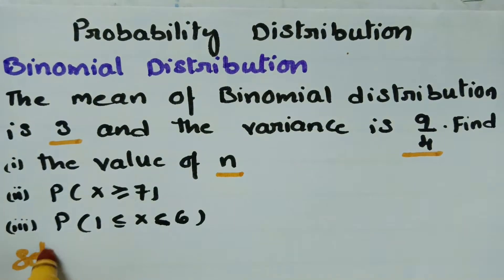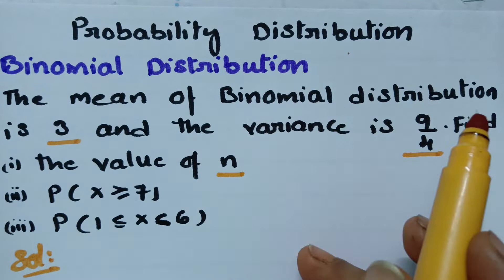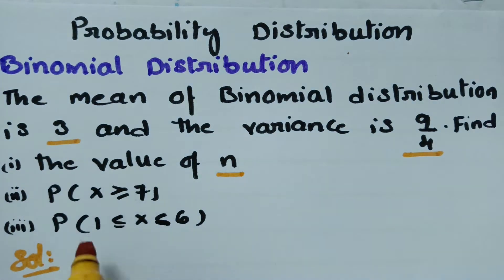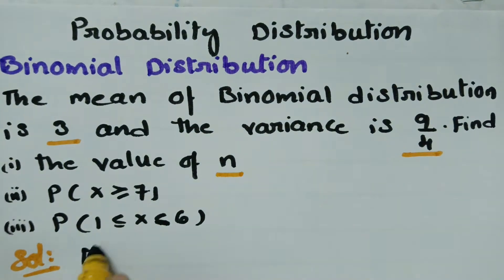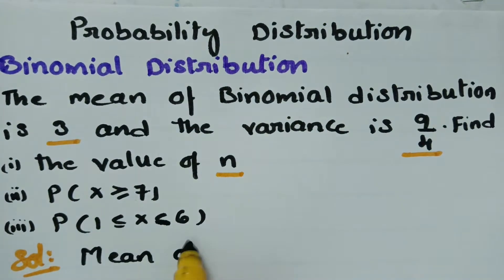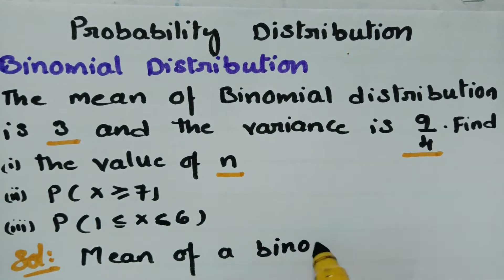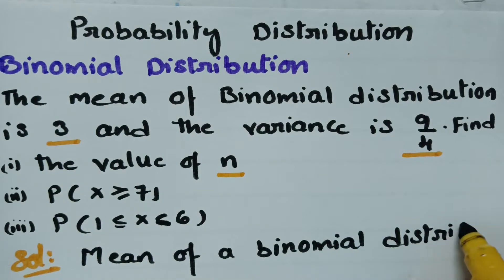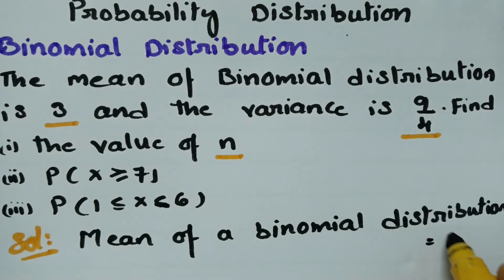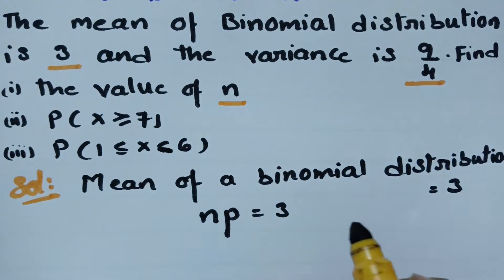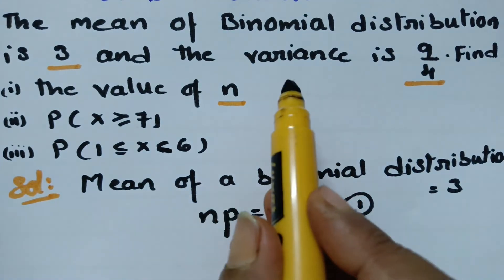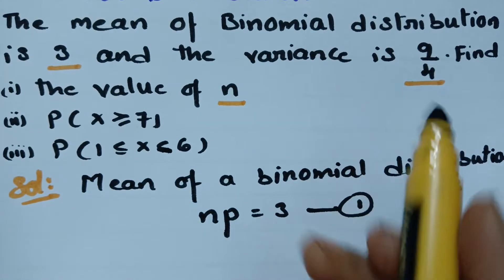In the question, the mean of a binomial distribution is given as 3. Mean is nothing but np. So np is given as 3. This is equation number 1. Also given is the variance as 9 by 4.